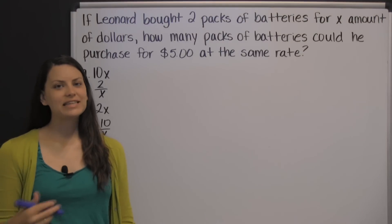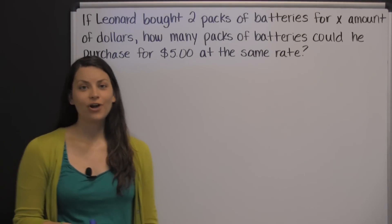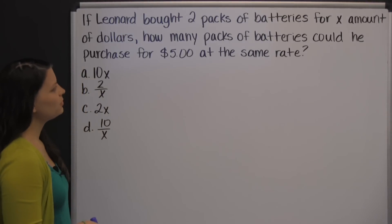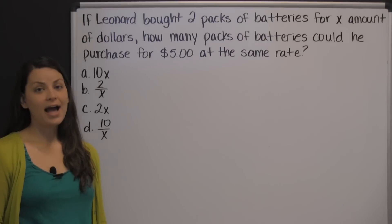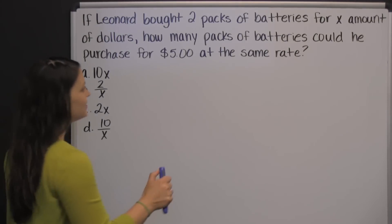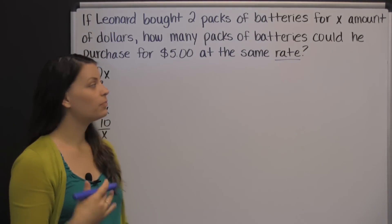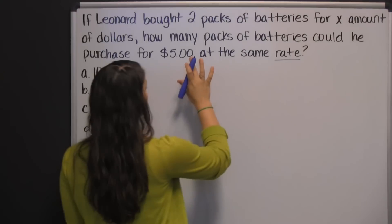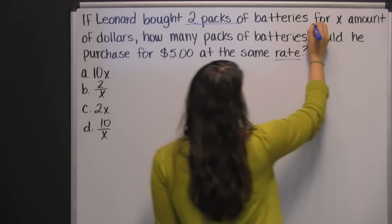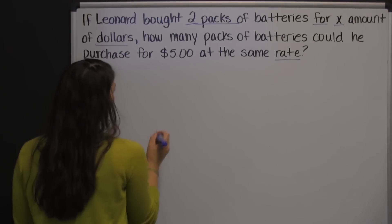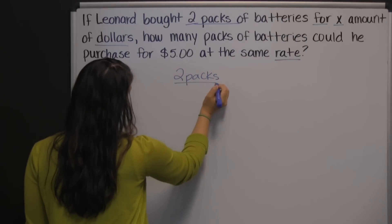On the TEAS test, you're going to see a lot of word problems. Here's one example you might encounter. If Leonard bought two packs of batteries for x amount of dollars, how many packs of batteries could he purchase for five dollars at the same rate? The word 'rate' is a key word here because it tells you to set up a ratio, or a proportion actually. Our first rate is two packs of batteries for x dollars, which we set up as two packs over x dollars.